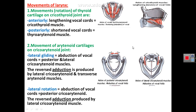Movement of the laryngeal skeleton by the intrinsic muscles includes movement of the thyroid cartilage anteriorly and posteriorly, and movement of the arytenoid cartilage either by gliding or rotation. These movements produce abduction and adduction of the cords, while thyroid cartilage movement produces tension and relaxation, thus changing the tone of the voice.